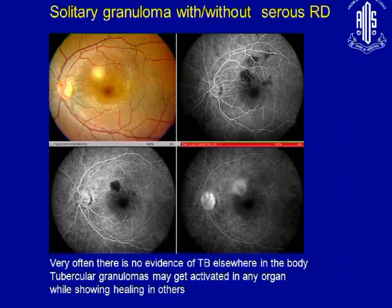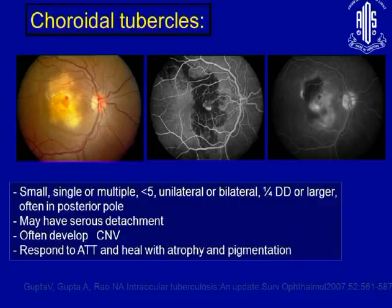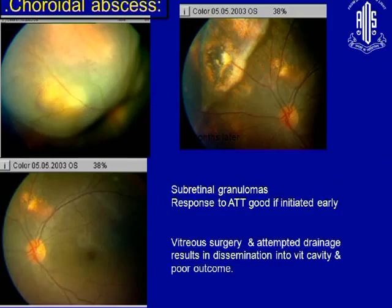This is an example of a TB granuloma, where not only is there direct infection by the TB organism but the immune response also produces a very classical picture. When you see a little perifocal hemorrhage, it is suggestive of RAP lesion or retinal angiomatous proliferation, very suggestive of a TB granuloma. These patients respond very well to treatment. There can be a large abscess formation but, once you recognize it, they respond very well.